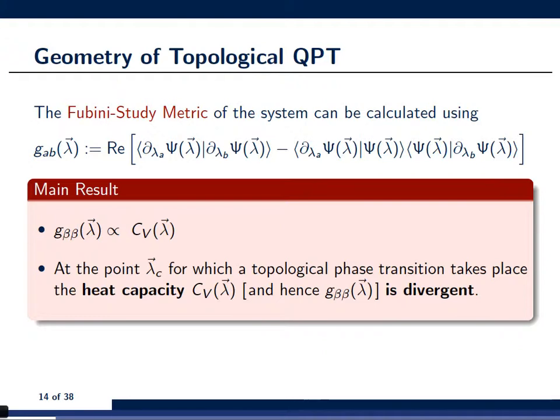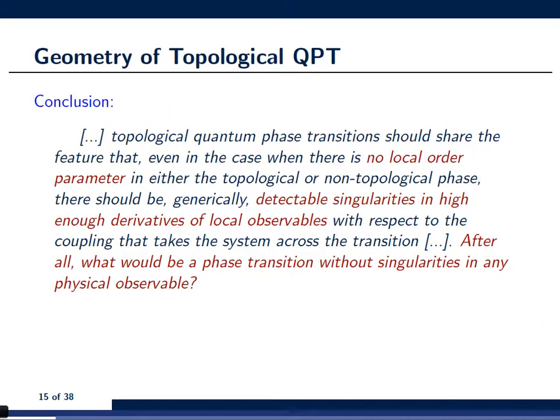Now, these are two interesting results and what Castelnovo actually concluded was, and this is a citation from his paper, that topological quantum phase transitions should share the feature that even in the case when there is no local order parameter in either the topological or the non-topological phase, there should be generically detectable singularities in high enough derivatives of local observables with respect to the couplings that take the system across the transition. Because, after all, what would be a phase transition without singularities in any physical observable?